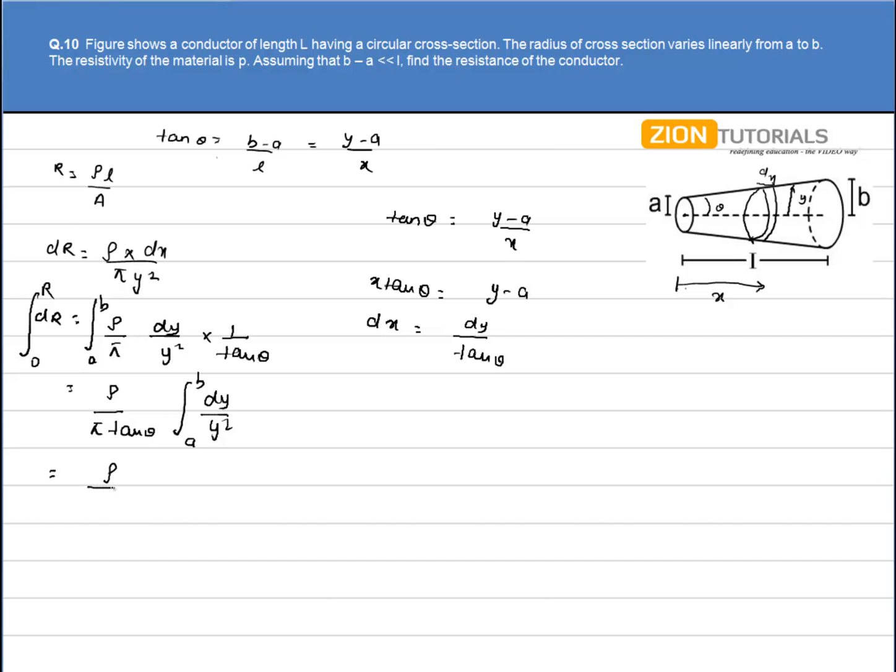So I have ρ by π tan theta, y to the power minus 2 plus 1, divided by minus 2 plus 1, from a to b.